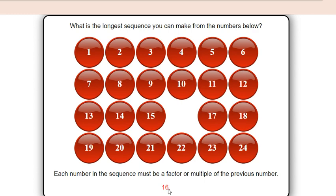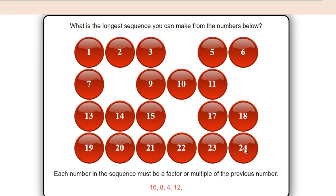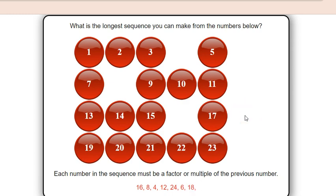So I chose 16. Now I am choosing 8, then 4. I can select 12. I can select 24. 24 is a multiple of 12. Then because it is 24, which is divisible by 6, so I can select 6. Then 6 times 3 is 18, so let us go for 18. Then I can choose 9. 9 is a factor of 18. Then 3.